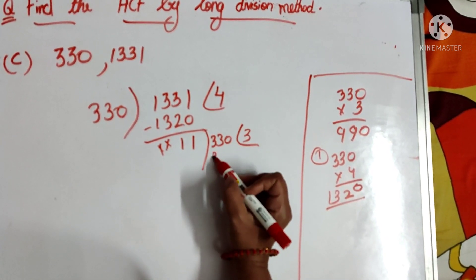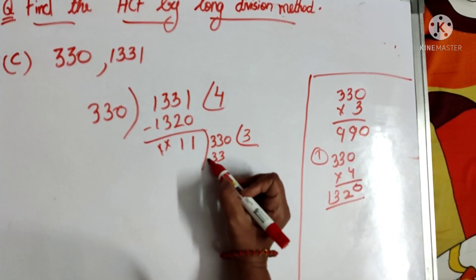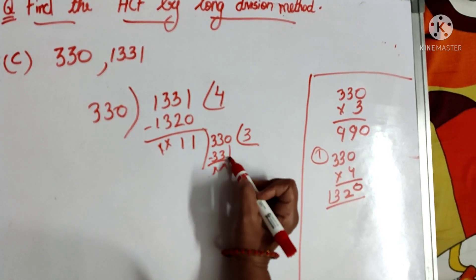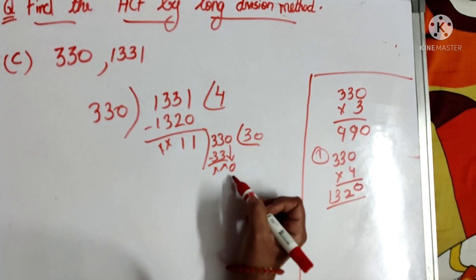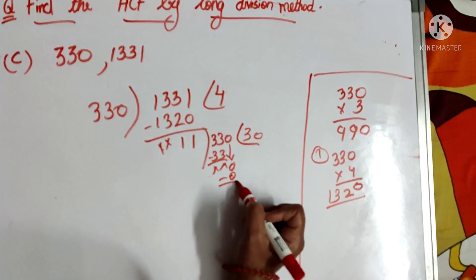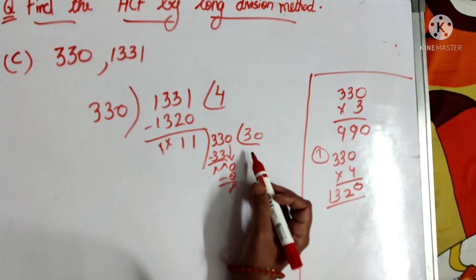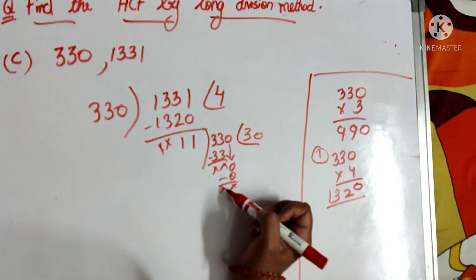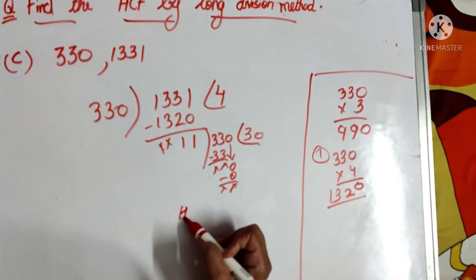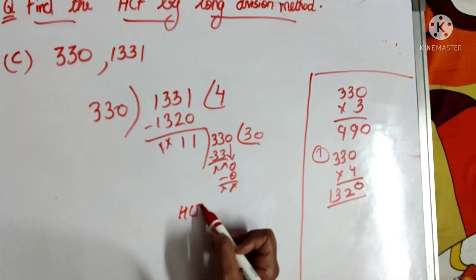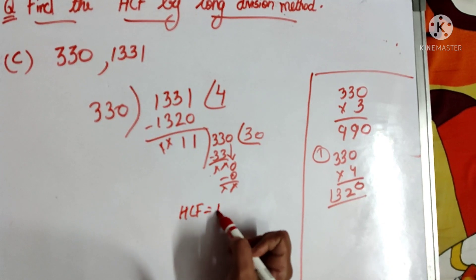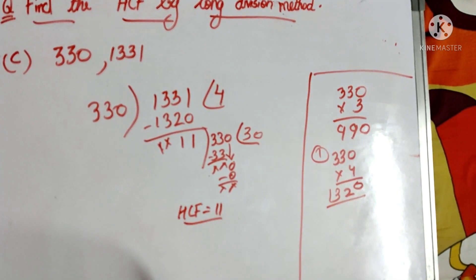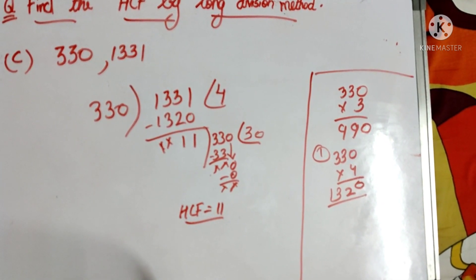Now 330 divided by 11: 11 times 30 is 330. So 11 goes into 330 exactly 30 times with remainder 0. It gets divided completely. The last divisor here is 11. Therefore, HCF of 330 and 1331 is 11.